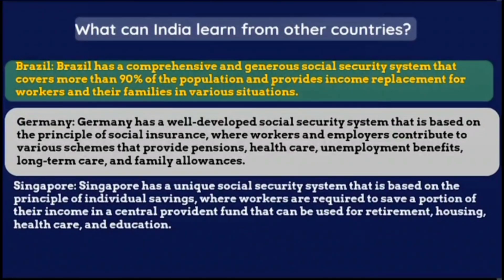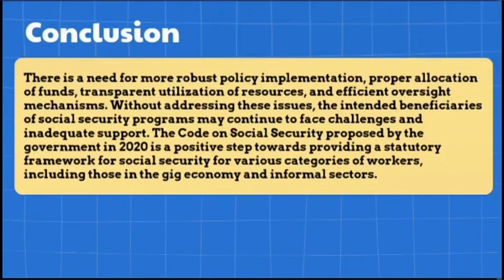Singapore has a unique social security system based on the principle of individual savings, where workers are required to save a portion of their income in a central provident fund that can be used for retirement, housing, health care, and education. In conclusion, there is a need for more robust policy implementation, proper allocation of funds, transparent utilization of resources, and efficient oversight mechanisms. Without addressing these issues, the intended beneficiaries of social security programs may continue to face challenges and inadequate support. The Code on Social Security proposed by the government in 2020 is a positive step towards providing a statutory framework for social security for various categories of workers, including those in the gig economy and informal sectors.